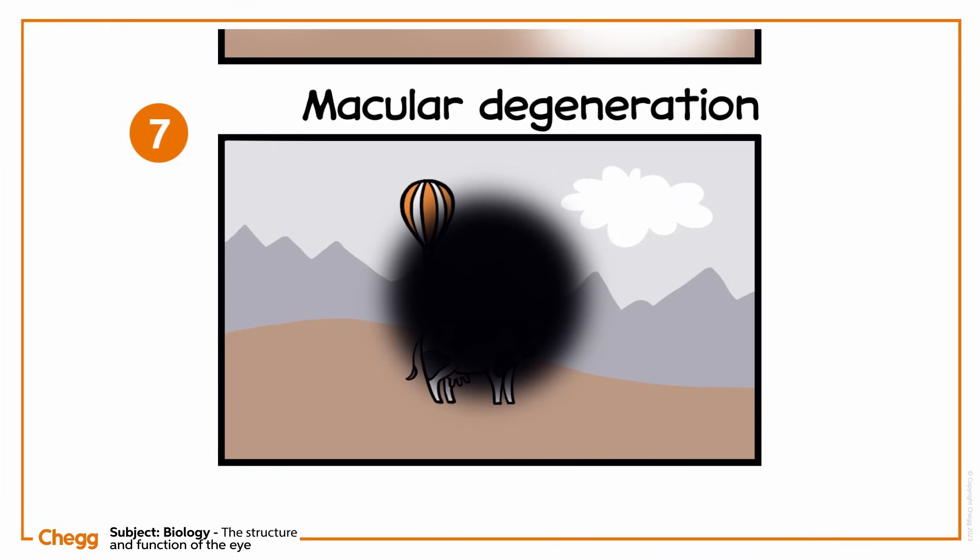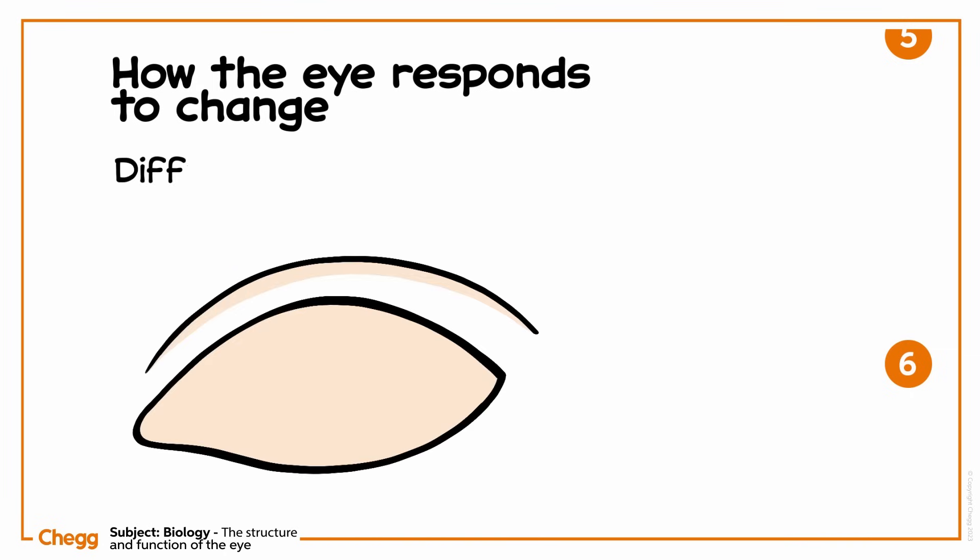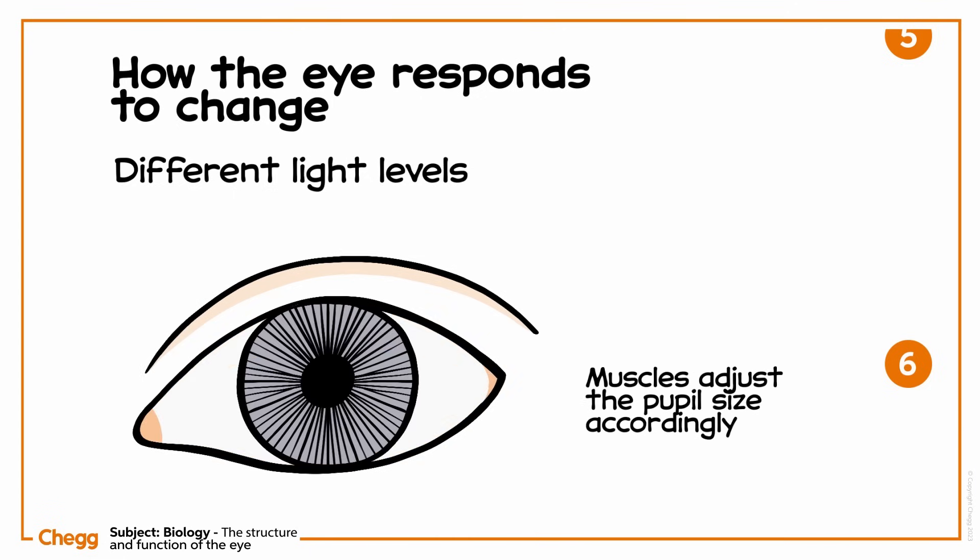When working well, eyes are responsive. Let's observe how the eye responds to change. The eye can respond to different light levels. Too much or too little light can hinder someone's vision, so the muscles of the iris adjust the pupil size accordingly. In bright light, the iris contracts the pupil, reducing how much light enters the eye. In dim light, the iris expands the pupil, ensuring that more light can enter the eye.